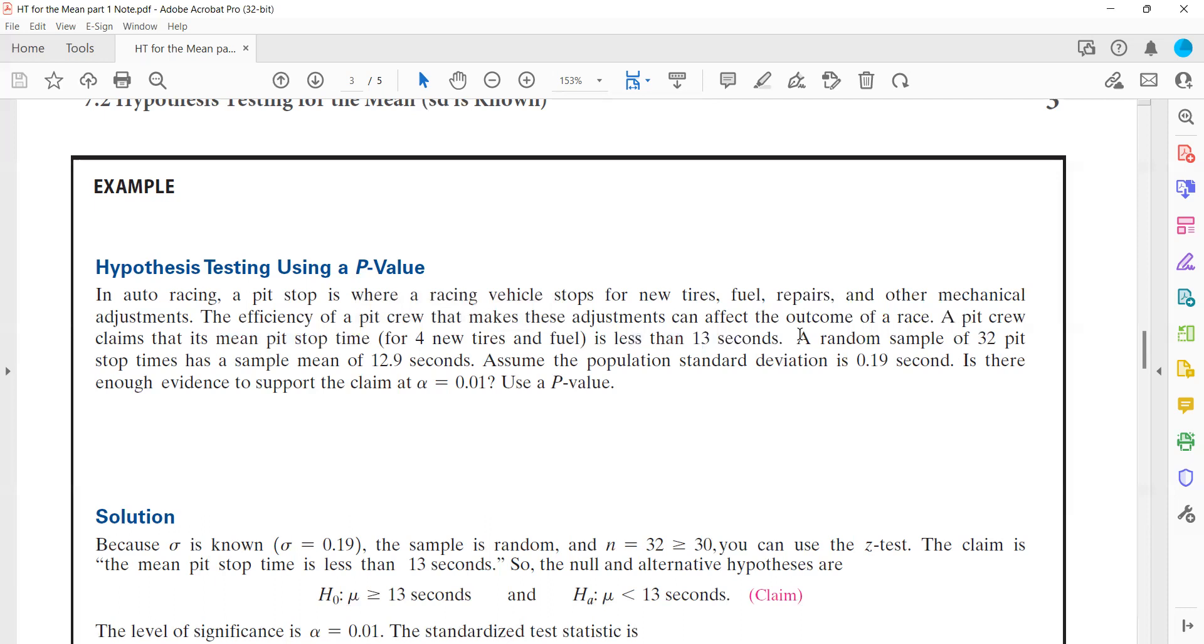So as a statistician, we randomly select 32 pit stop times, and we found the mean, which is 12.9 seconds. From past studies, the population standard deviation is 0.19 seconds. Is there enough evidence to support the claim at alpha 1%?